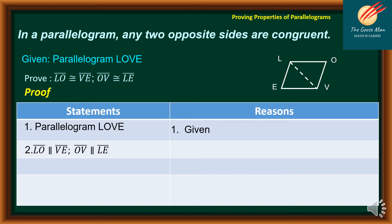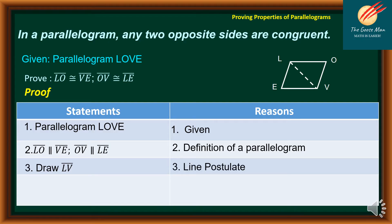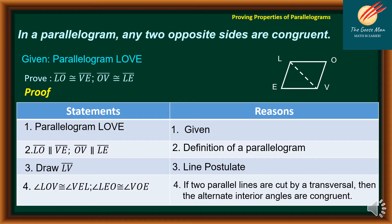For number two, line segment LO is parallel to line segment BE, as well as line segment OV is parallel to line segment LE, so we have the definition of a parallelogram. For number three, we draw line segment OE, and angle LEO is congruent to angle BOE. For number four, if two parallel lines are cut by a transversal, then the alternate interior angles are congruent.